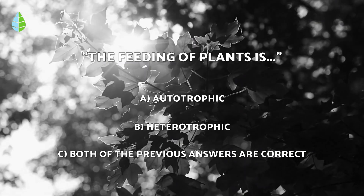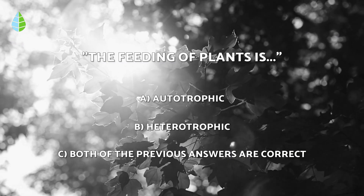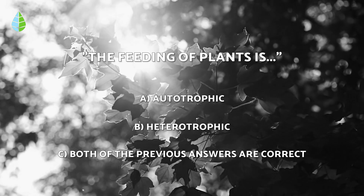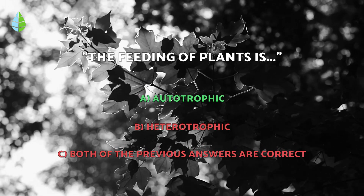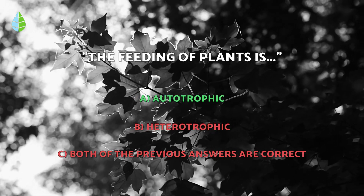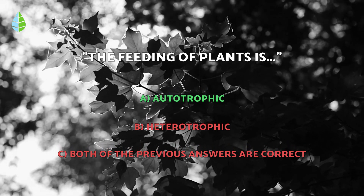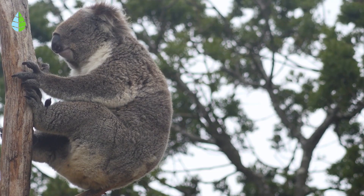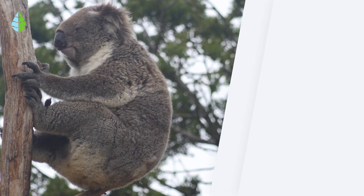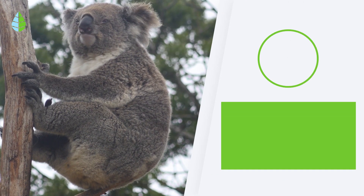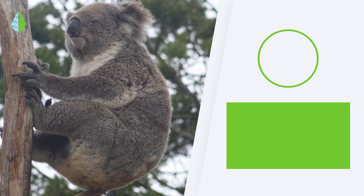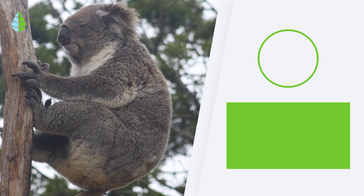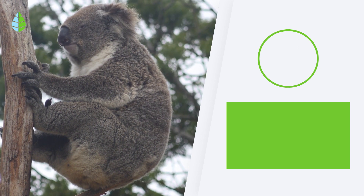Going back to the question we asked you earlier — the correct answer is A. The feeding of plants is autotrophic, while that of animals is heterotrophic. Well, that's it for today. Thank you for watching. Let us know in the comments if you knew about these vital functions, and until next time.